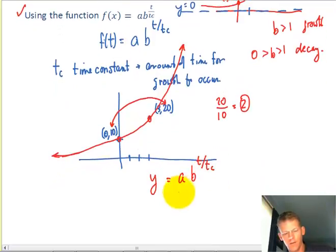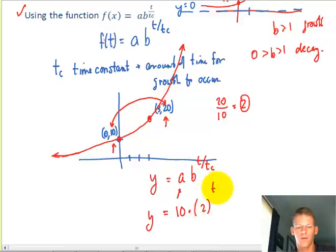So again, the a value is your initial value. That would be 10 times the b value because the value I had was 20 and this was 10. Again, that's going to be a doubling function and the time constant is the amount of time it took for doubling to occur.